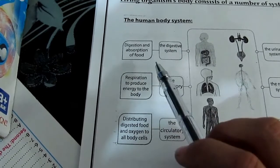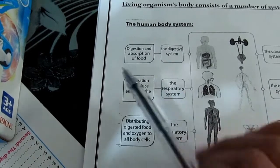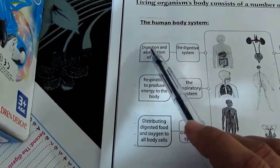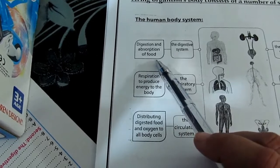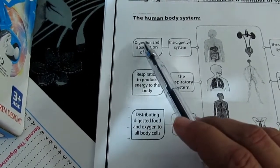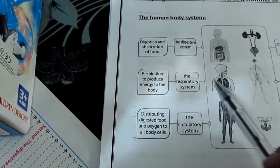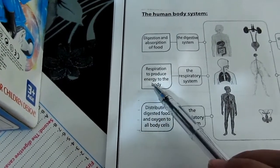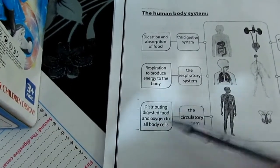Let's learn about the function of each system. Number one: digestive system — its function is the digestion and absorption of food. Number two: respiratory system — its function is respiration, to produce energy for the body.